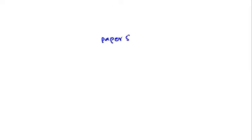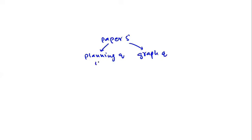Hello everyone, welcome to the first class of A-level physics paper 5 crash course. Paper 5 consists of two questions. The first question is called the planning question and the second question is called the analysis, conclusions and evaluation question — but I'll refer to it as the graph question because you have to draw a graph in it. Each question carries 15 marks, making paper 5 a total of 30 marks.